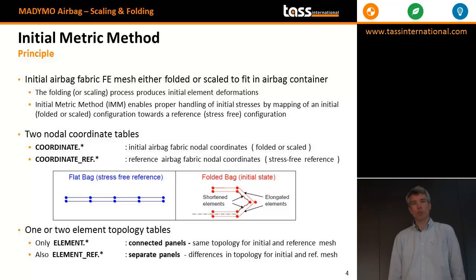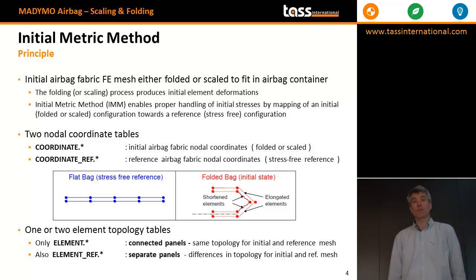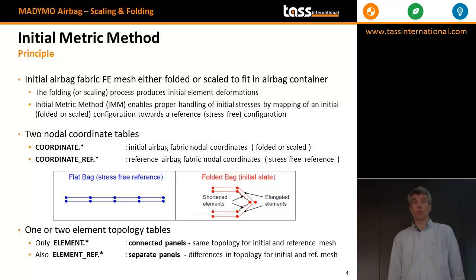First, let's focus on how to set up a reference mesh and initial method. You have two sets of coordinate tables: coordinates and coordinates underscore ref. As it may indicate, the ref is used to store the nodal coordinates in the reference state — what we call the stress-free state. The coordinates contain either the folded or the scaled coordinates.